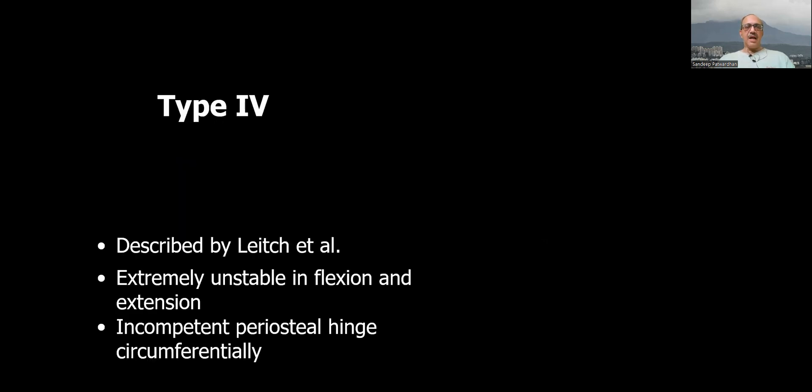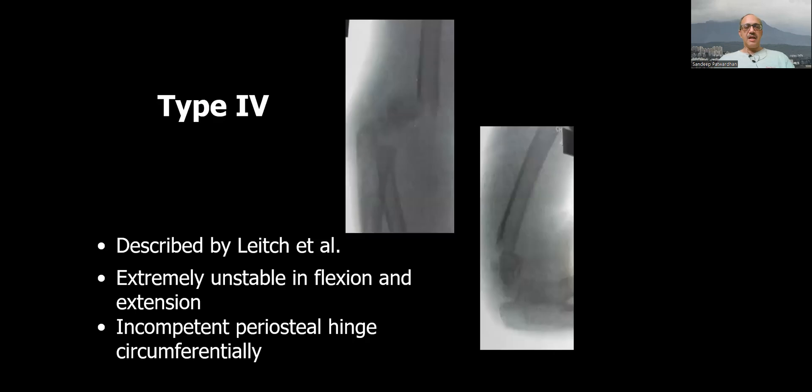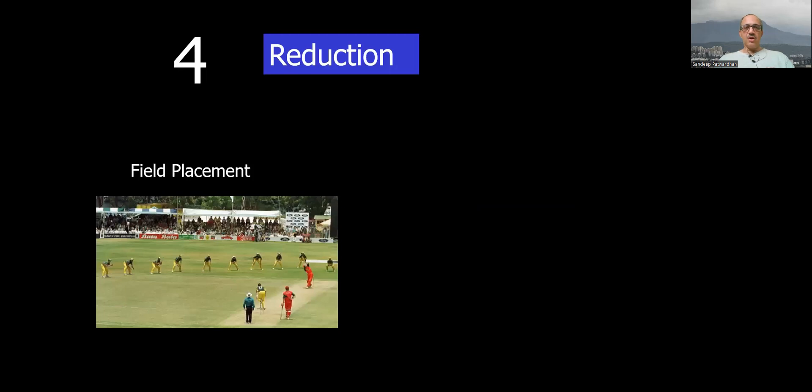Also know about type 4 injury described by Leitch where anterior periosteum is torn and it's extremely unstable in flexion as well as extension. So when you flex it, it over-reduces. So you have to joystick it.